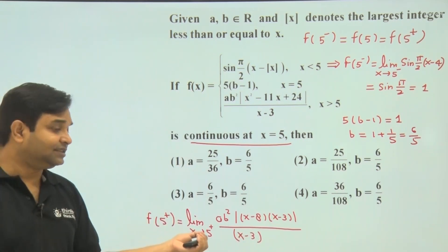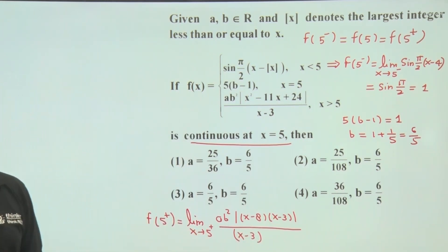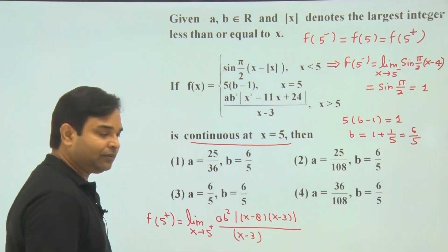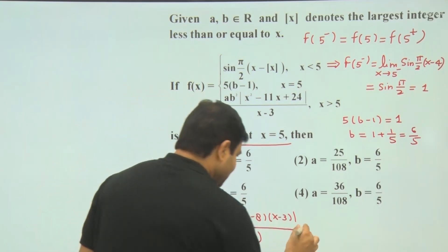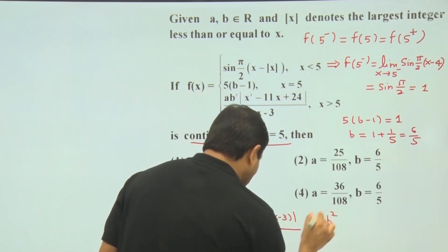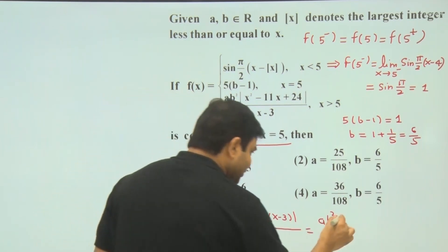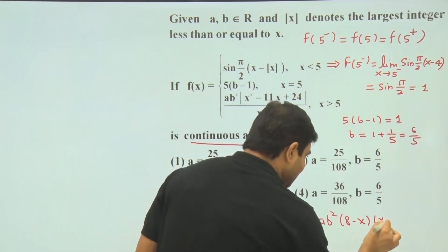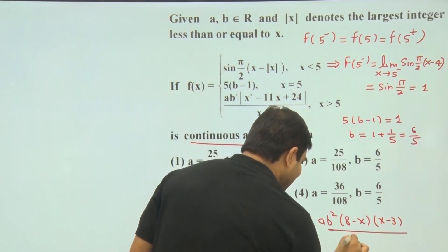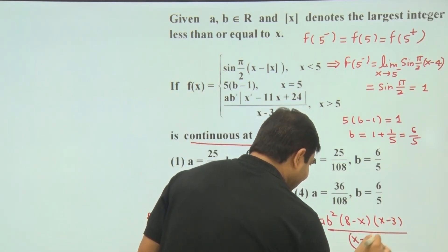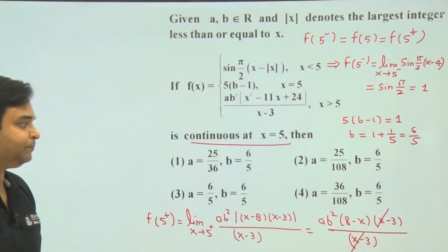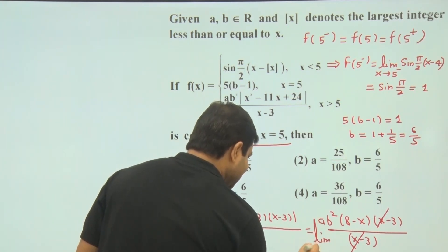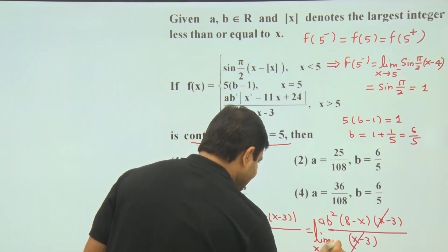Now because x is just greater than 5, if x is greater than 5 we can see this term is negative but this term is positive. So finally we can write ab², this term is negative so this will be 8 minus x. This term is positive, so second will be plus x minus 3, and x minus 3, x minus 3 will cancel out. We have to find the limit of this function when x is tending towards 5 plus.